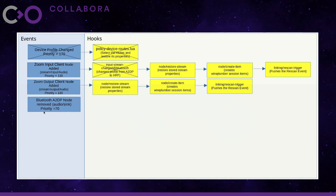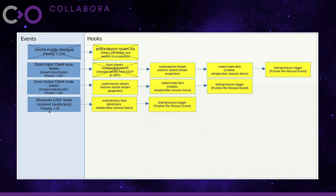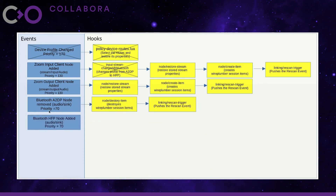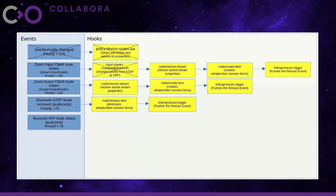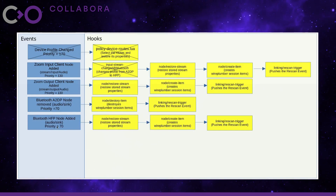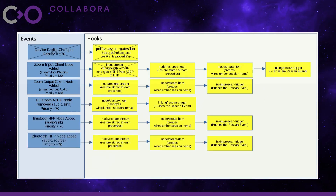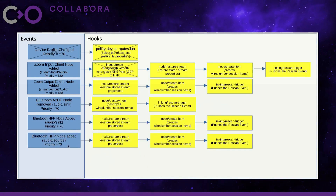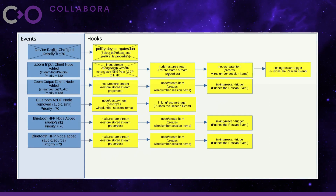This results in even more PipeWire signals and events. The first is the A2DP node removal — the A2DP profile has been changed and those nodes will have to be removed. These are the hooks for that event. HFP profile has been selected, so HFP device nodes will have to be added. This is the sink node and this is the source node, with their respective hooks.